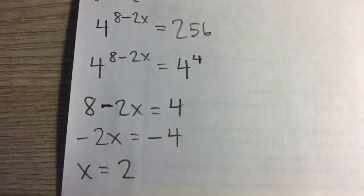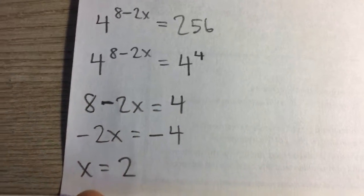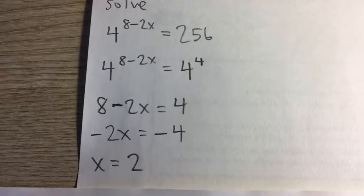So 8 minus 2x equals 4. Solve for x: subtract 8 on both sides, divide by negative 2, and I get x equals 2. That's the answer.